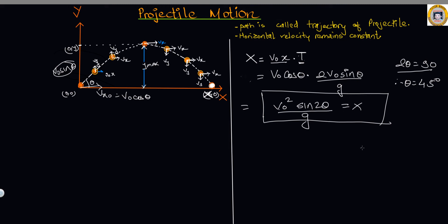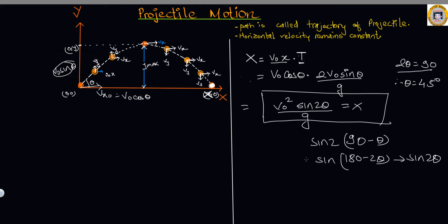Also, if you fire at an angle of 90 minus theta, the sine 2theta term becomes sine(180 minus 2theta), which gives the same range as for theta. In this way we can find the time of flight and horizontal range.